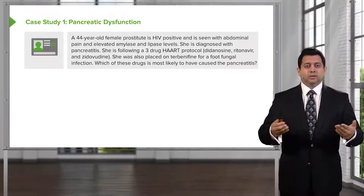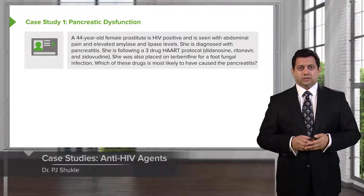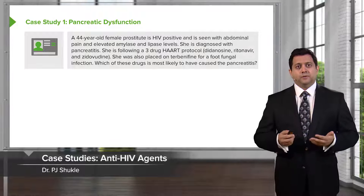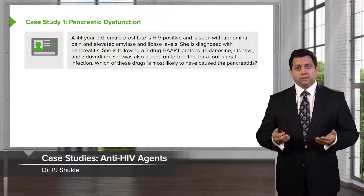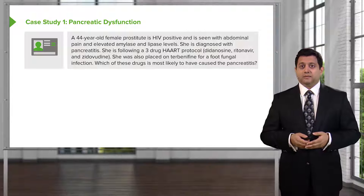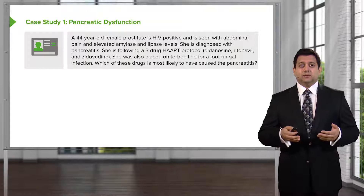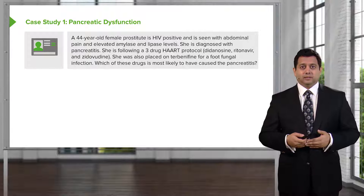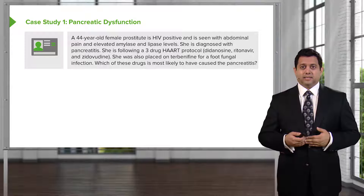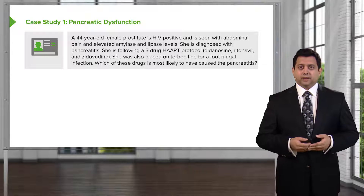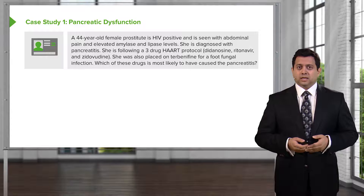Let's go on to a question on HIV. A 44-year-old female prostitute is HIV positive and is seen with abdominal pain and elevated amylase and lipase levels. She is diagnosed with pancreatitis.